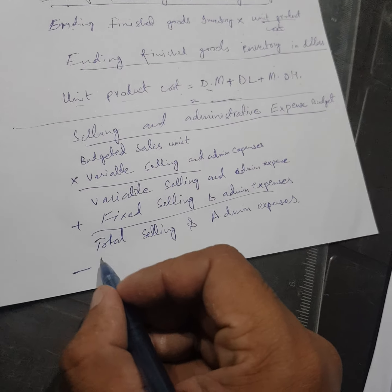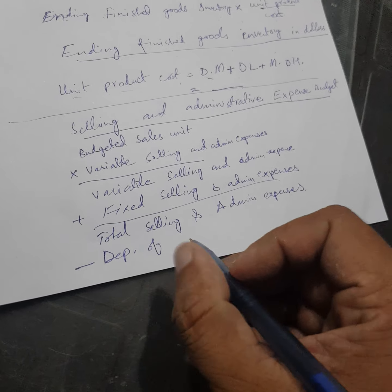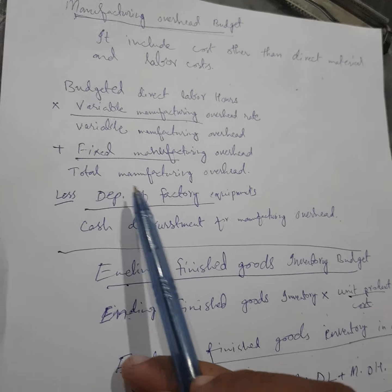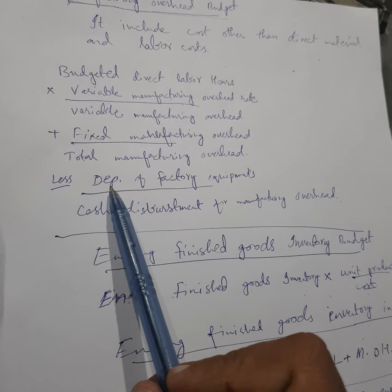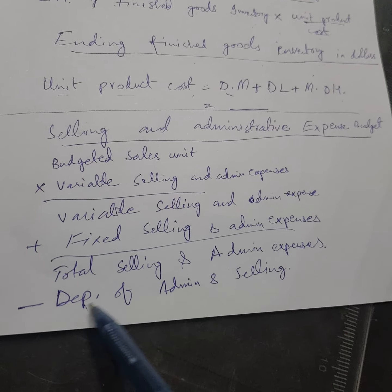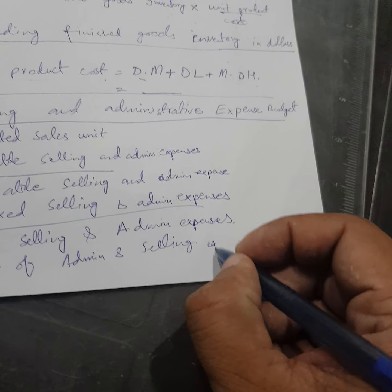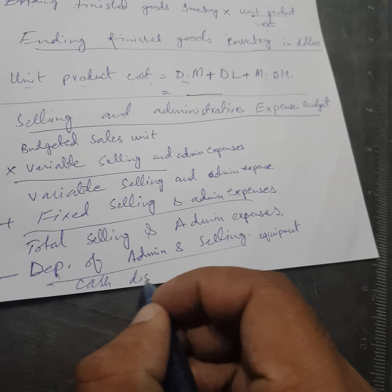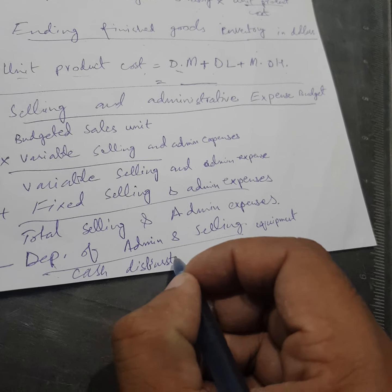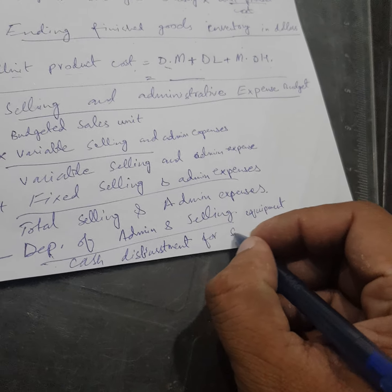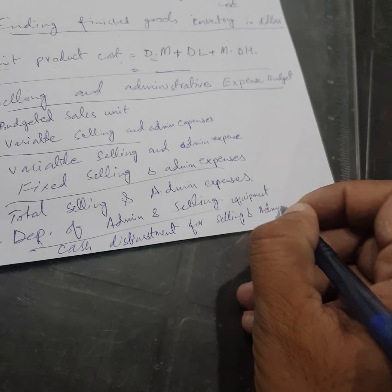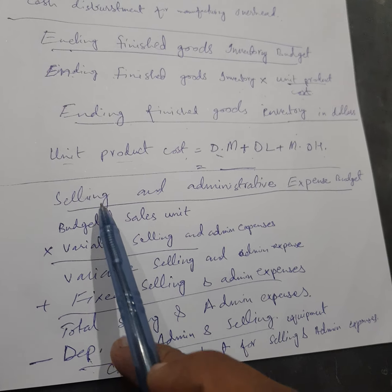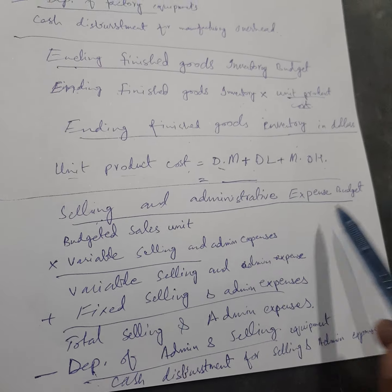Remember, we will also deduct the depreciation of admin and selling equipment — the same way we deducted the depreciation of factory equipment in manufacturing overhead. By deducting this depreciation, we will get the cash disbursement for selling and admin expenses. In this way, we calculate and build the selling and admin expenses budget.